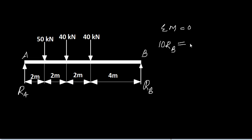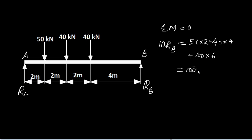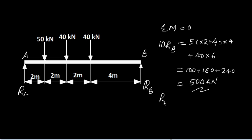So 10·RB = 50×2 + 40×4 + 40×6. That gives 100 + 160 + 240 = 500 kN·m. Therefore RB = 500 divided by 10, which is 50 kN.